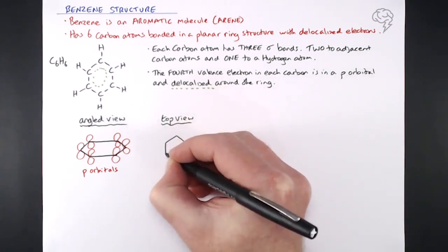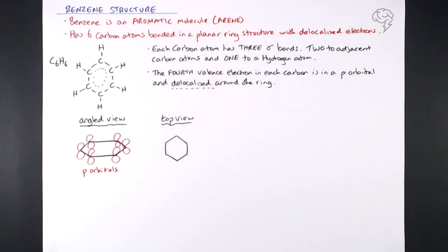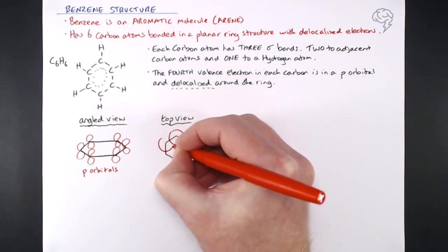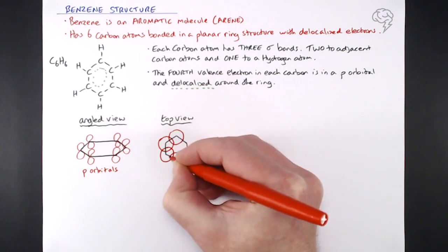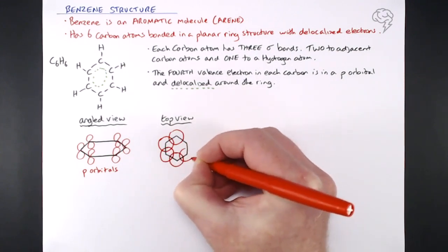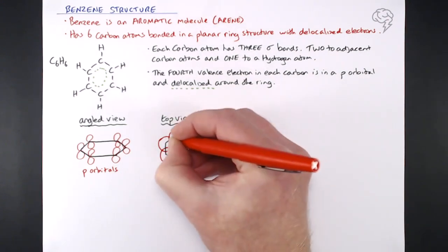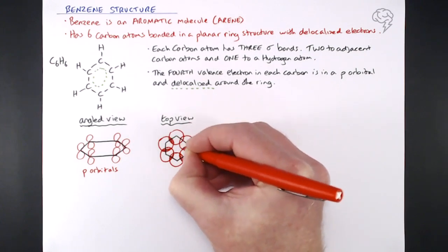So drawing the top view of the hexagon, I'm trying to do my best hexagon here for you. If we look at those p orbitals from the top, remember those p orbitals are like figure of eight shape, but they are three-dimensional. Imagine two balloons end to end, and that's what a p orbital looks like. So if we're looking at them from the top, they look circular. So one p orbital over each corner of the hexagon where those carbon atoms are.